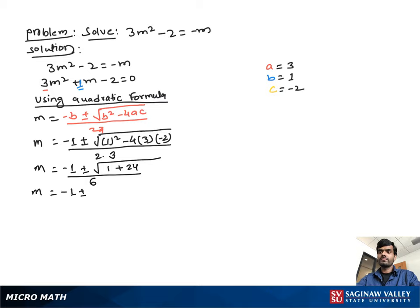Now m equal to negative 1 plus or minus square root of 25 over 6. The square root of 25 is equal to 5, so m equal to negative 1 plus or minus 5 over 6.